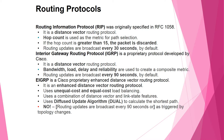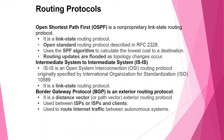EIGRP (Enhanced Interior Gateway Routing Protocol) is an advanced distance vector routing protocol. It supports unequal cost and equal cost load balancing and uses a combination of distance vector and link state features. It uses the DUAL (Diffusing Update Algorithm) to calculate the shortest path. Routing updates are not broadcast periodically — instead they are triggered only by topology changes. OSPF (Open Shortest Path First) is a non-proprietary link state routing protocol described by RFC 2328. It uses the SPF algorithm to calculate the lowest cost path to a destination, with routing updates flooded when topology changes occur.